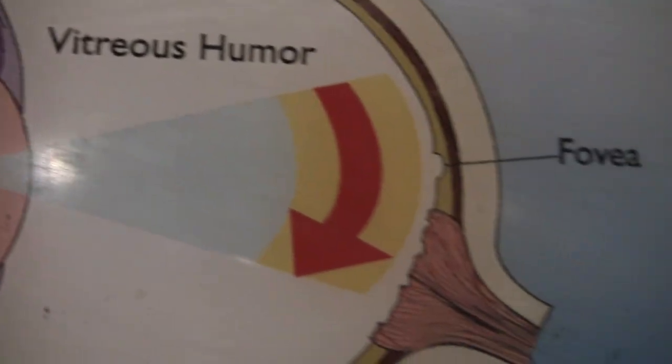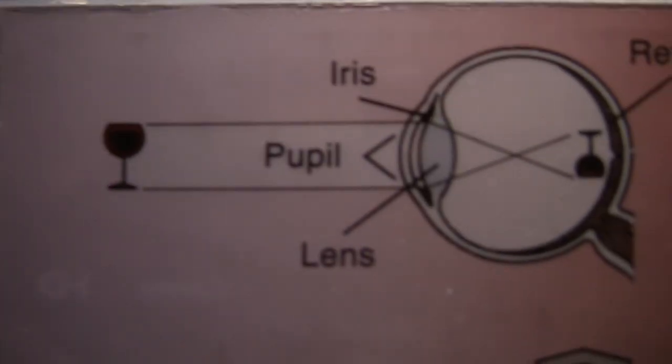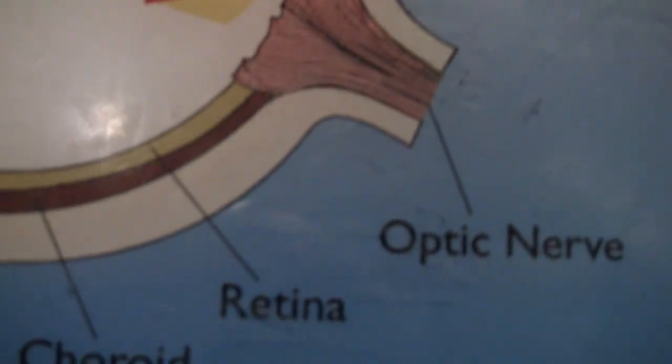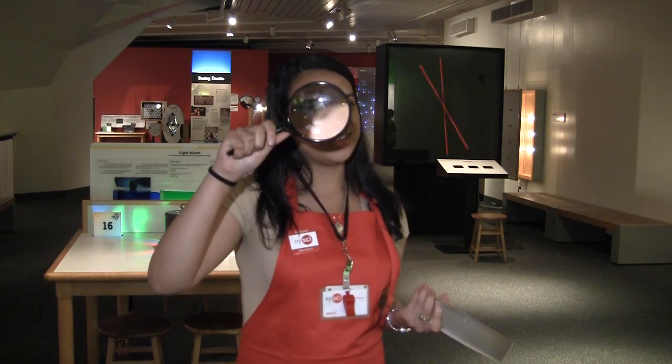For example, the lens in each of your eyes focuses the light of everything you see into a tiny spot on your retina. A magnifying glass works the same way.